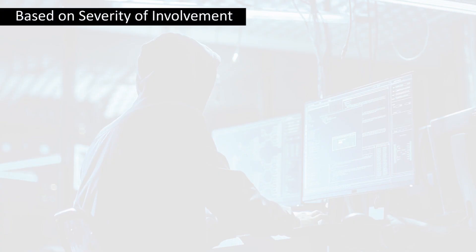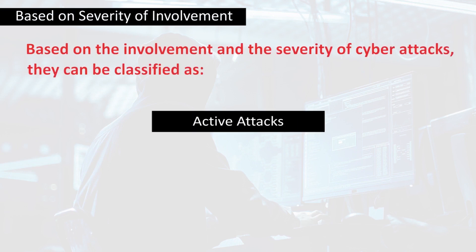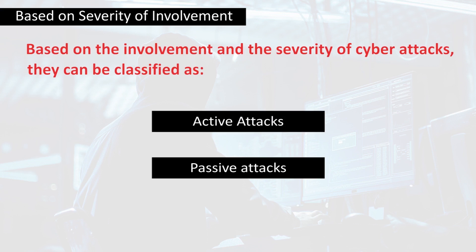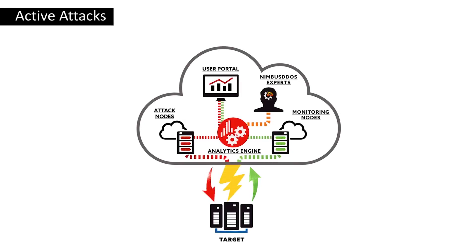Next, we will see classification based on the severity of involvement. Based on involvement and severity, cyber attacks are further classified into two: active attacks and passive attacks. Active attacks are types of attacks that enable the attacker to communicate data to all divisions during data transmission, either in unidirectional or multidirectional form.